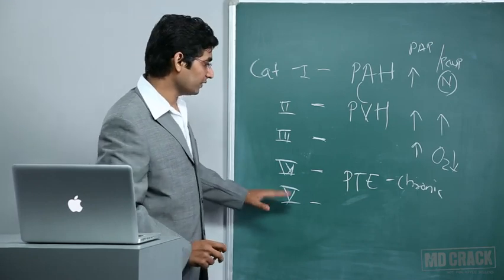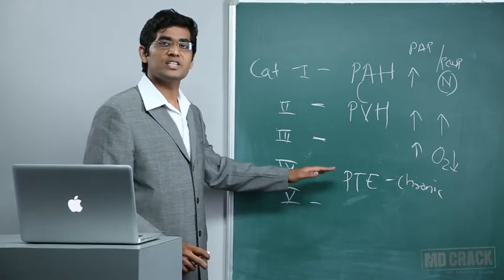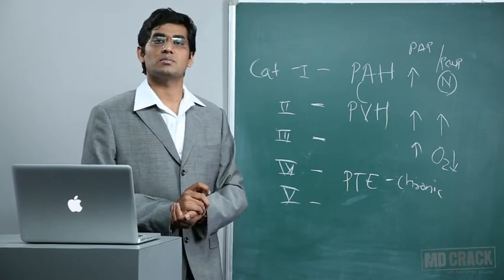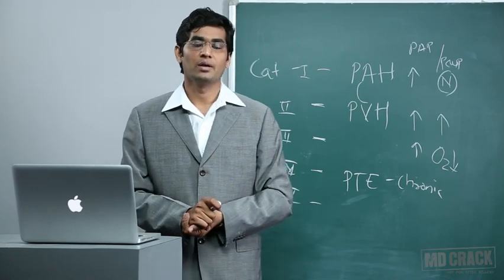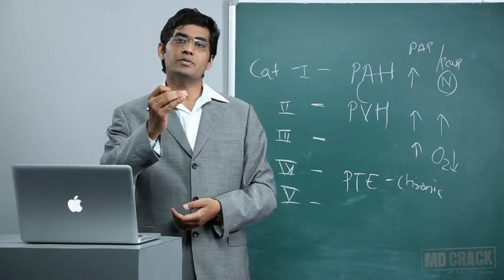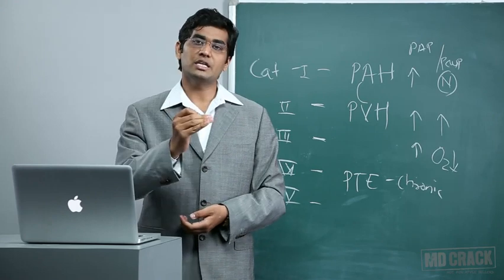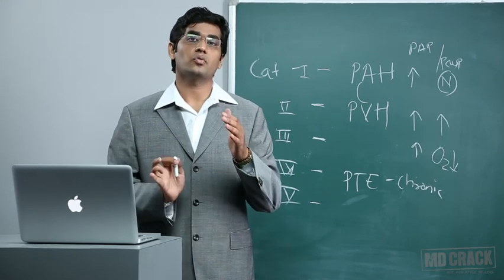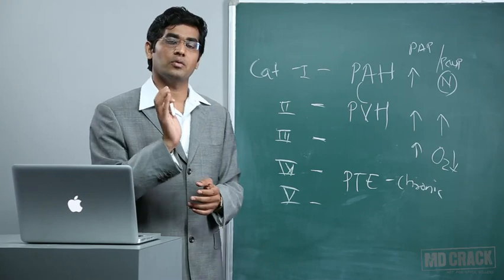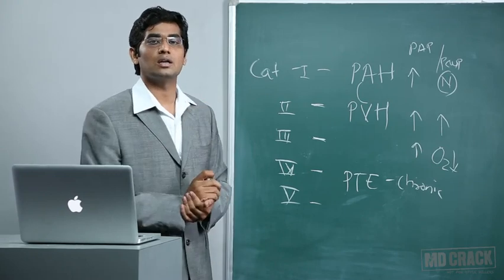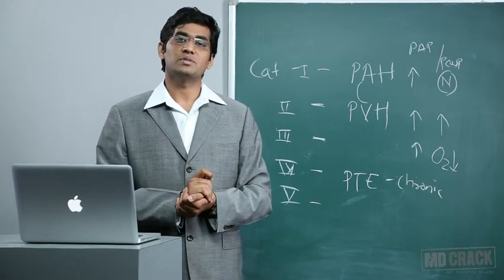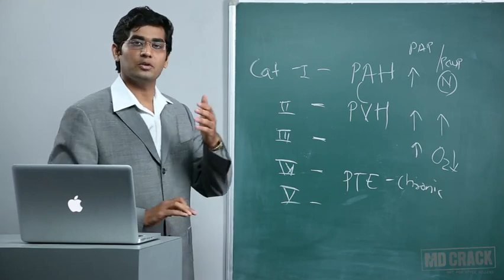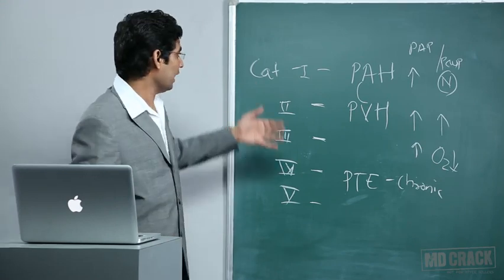Category 5 includes miscellaneous causes like sarcoidosis or chronic anemia. The relationship between pulmonary hypertension and these diseases is not well defined, which is why they have been placed under the miscellaneous category.